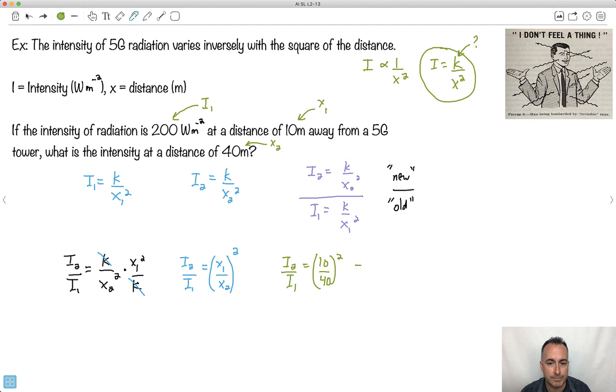Now the good news is I'm ready. Let's just plug in all the different letters here. This one right here is i1. This here must be x1. This must be x2. So I'm going to have i2 over i1. I'm going to leave it like this. x1 over x2, x1 is 10, x2 is 40, and all that is squared.